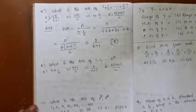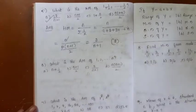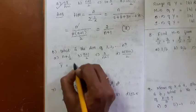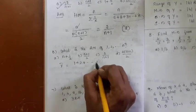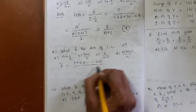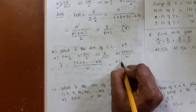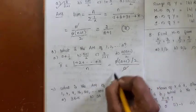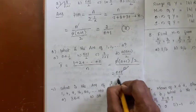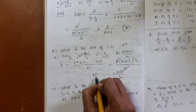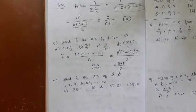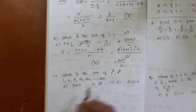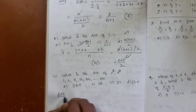Problem: What is the arithmetic mean of 1, 2, 3, ..., n? The sum of the first n natural numbers is n(n+1)/2. Dividing by n gives the arithmetic mean as (n+1)/2. The answer is option B.